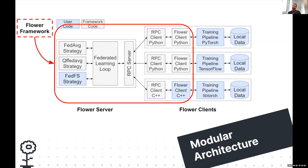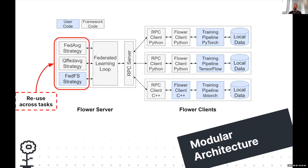On the server side, Flower is flexible as well. Using a plug-in architecture, you can bring your own strategies to define how to perform federated learning — for selecting clients, aggregating updates received from clients, instructing clients on the number of epochs to train, and more. When people start building these systems, they usually begin with one of the existing built-in strategies, and as workloads get more advanced, they move on to implementing their own strategies.